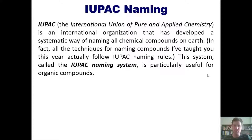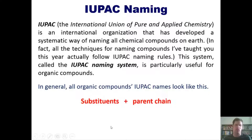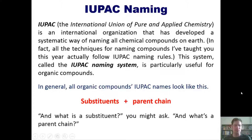This system, the IUPAC naming system, is particularly useful for organic compounds. In general, all organic compound IUPAC names look like a bunch of substituent names followed by a parent chain name. You might wonder: what is a substituent and what is a parent chain?